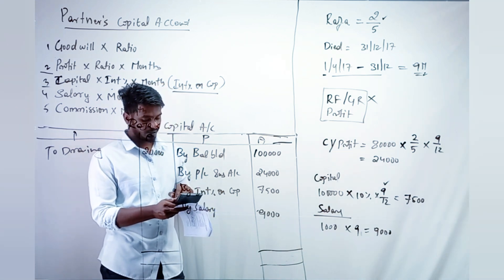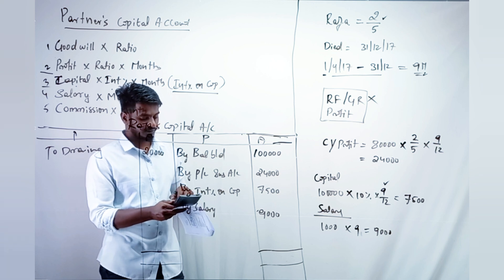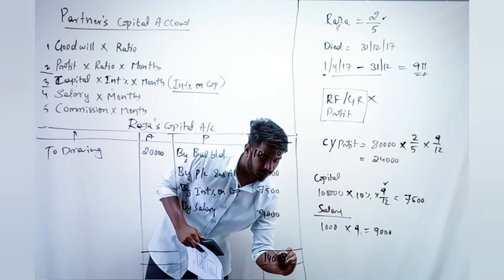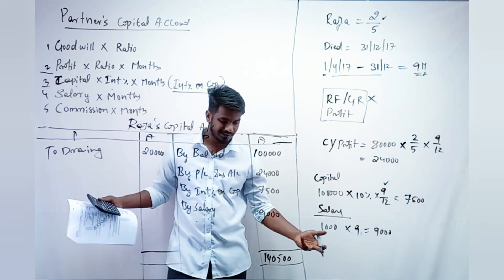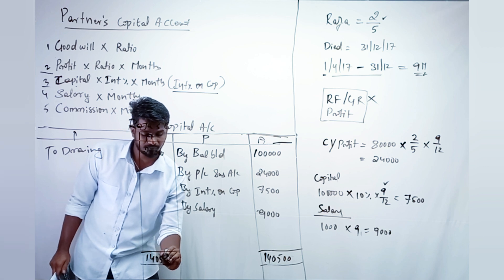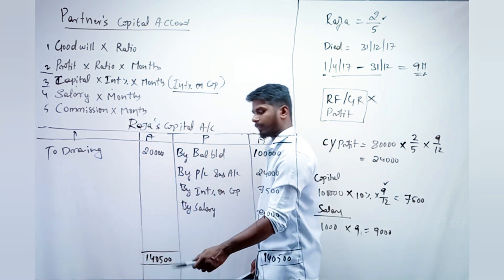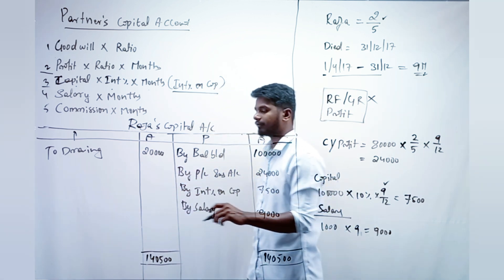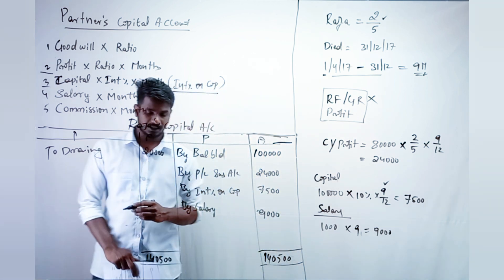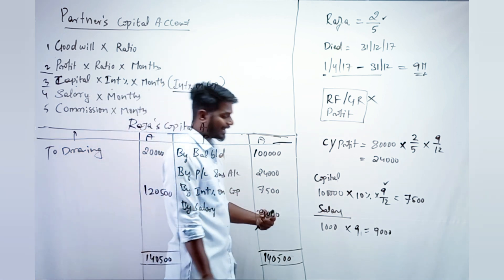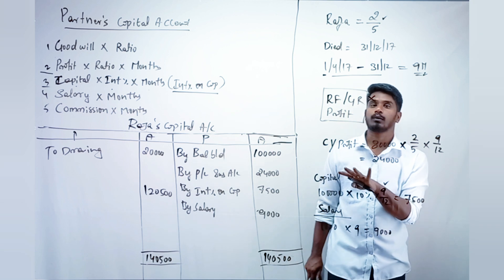Now let me calculate the totals. On the credit side: 1,00,000 + 24,000 + 7,500 + 9,000 = 1,40,500 rupees. On the debit side: drawings are 20,000. So 1,40,500 minus 20,000 leaves 1,20,500, which will be transferred to the executor's account.